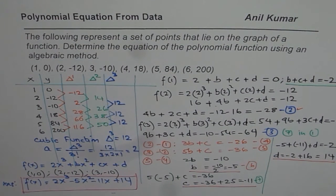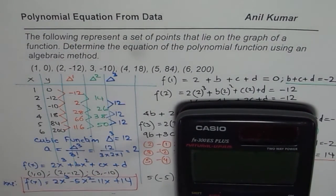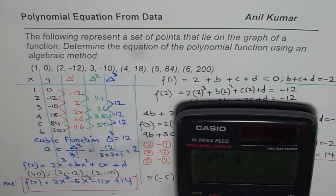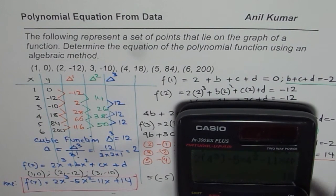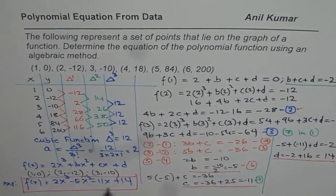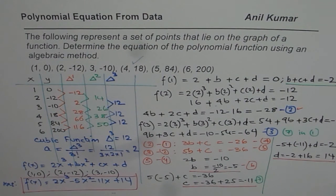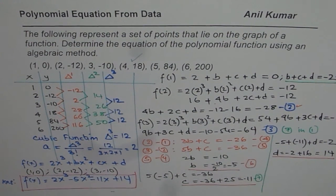Let us substitute x = 4: 2(4³) - 5(4²) - 11(4) + 14. We get 2(64) - 5(16) - 44 + 14 = 128 - 80 - 44 + 14 = 18. The point verifies that the equation is perfectly correct. That is how you solve, get the equation, and also check it.